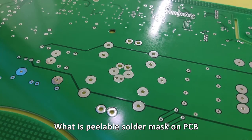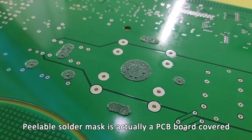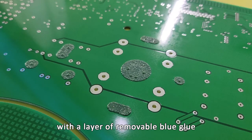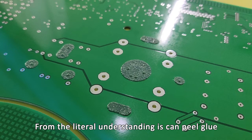What is peelable solder mask on PCB? What are the main applications? Peelable solder mask is actually a PCB board covered with a layer of removable blue glue. From the literal understanding, it's peel-able glue.